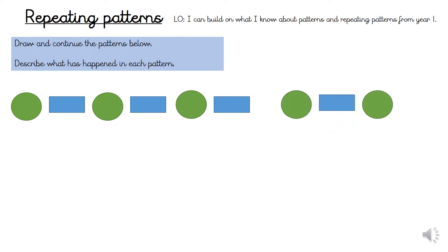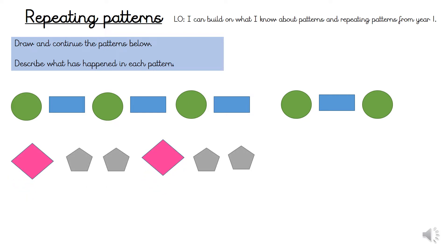Well done. It's circle, rectangle, circle. Let's have a look at this repeating pattern. Which shapes have been used? How does it repeat? Pause the video and have a go at drawing this repeating pattern and the next three shapes in the sequence.